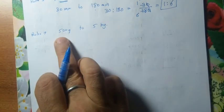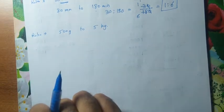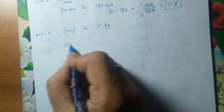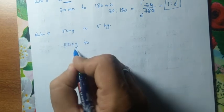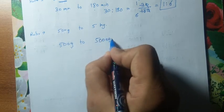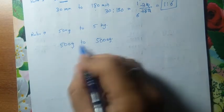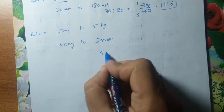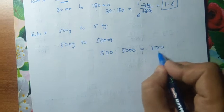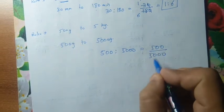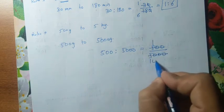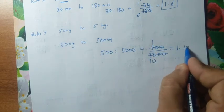Similarly, ratio of 500 grams to 5 kg: convert 5 kg to grams — 5 × 1000 = 5000 grams. Now both are in grams. Ratio is 500 by 5000 — simplify by removing zeros and dividing: 5×1=5, 5×10=50, ratio is 1 : 10.